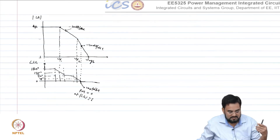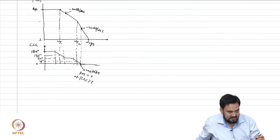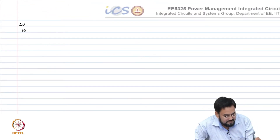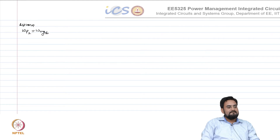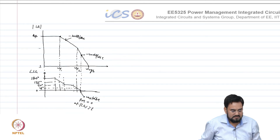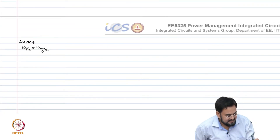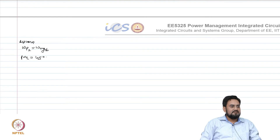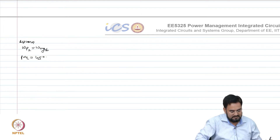So the phase margin here is 0. If the 0-degree crossing had happened beyond ωUGB, then you could have achieved some phase margin, and that is what you try to do. This means a second-order system has a tendency to become unstable. Now let us take another case: if ωp2 is at ωUGB, then what would happen? The phase margin would be 45 degrees. So your phase margin is 45 degrees — but is that a good stable system? It is marginally stable, actually.